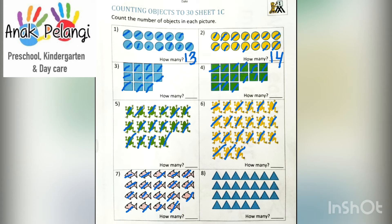Last one, number 8. Count how many triangles there are. 1, 2, 3, 4, 5, 6, 7, 8, 9, 10, 11, 12, 13, 14, 15, 16, 17, 18, 19, 20, 21, 22, 23, 24, 25, 26. How many? 26. Write 26 here.